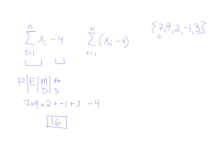So that means that this list is going to become 7 minus 4, which is 3, 9 minus 4, which is 5, 2 minus 4, which is negative 2, negative 1 minus 4, which is going to give me negative 5, and then 3 minus 4, which is going to give me negative 1.